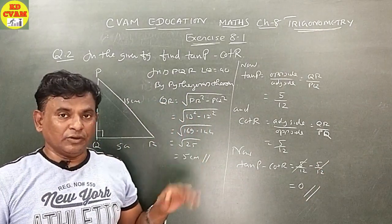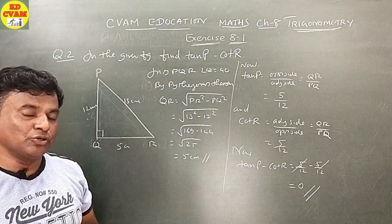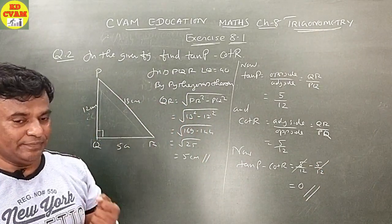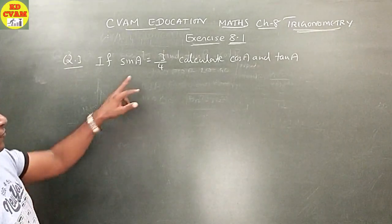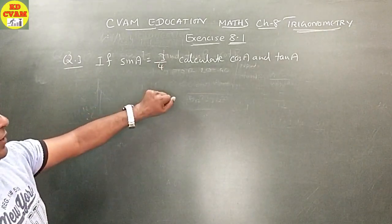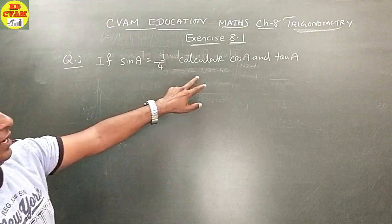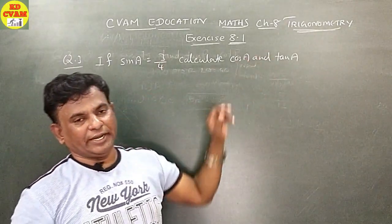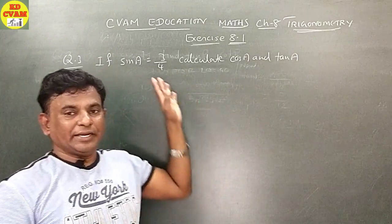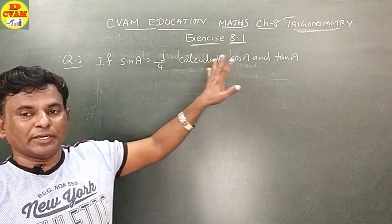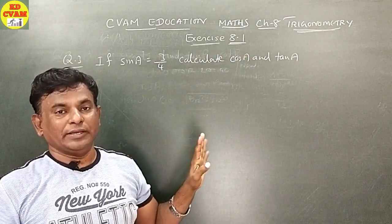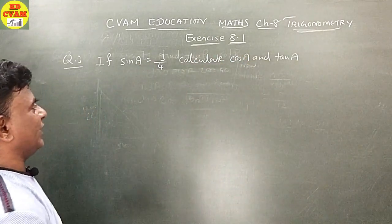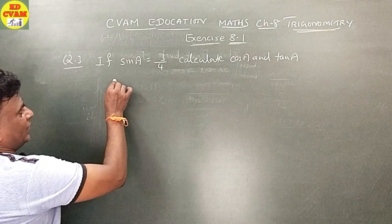I hope you understood. Let's go to the next sum. Question number 3: if sin A is equal to 3 upon 4, calculate cos A and tan A.